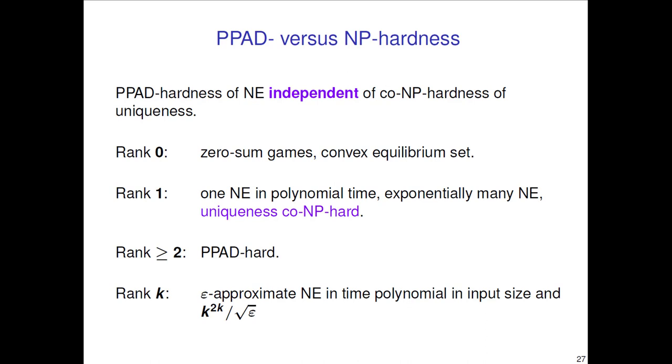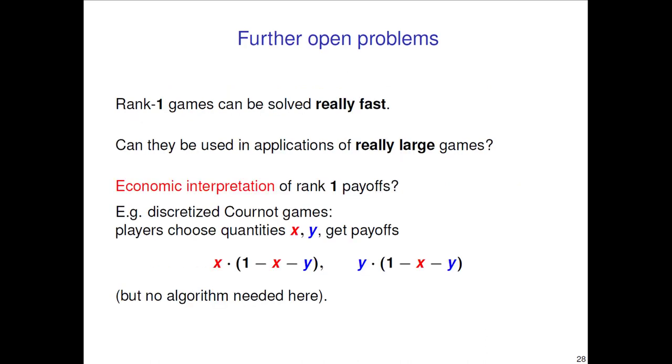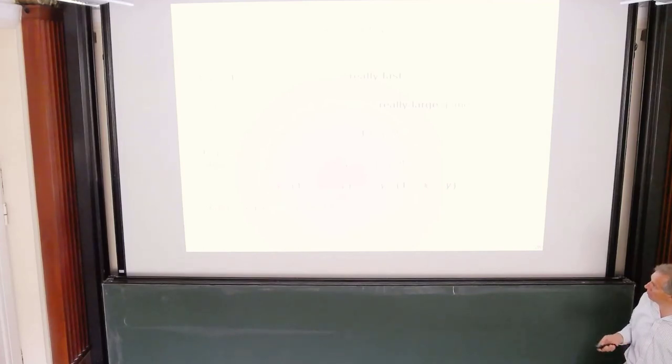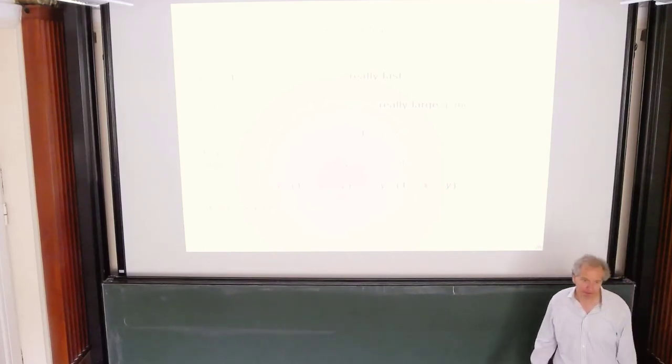Rank-1 games can be solved really fast. Can they be used in applications of really large games? Economic interpretation of rank-1 payoffs - for example, discretized Cournot games where players choose quantities and get payoffs x times (1 - x - y), y times (1 - x - y), but no algorithm needed here. I think they do come up in economics and that's an interesting additional question. Thank you.